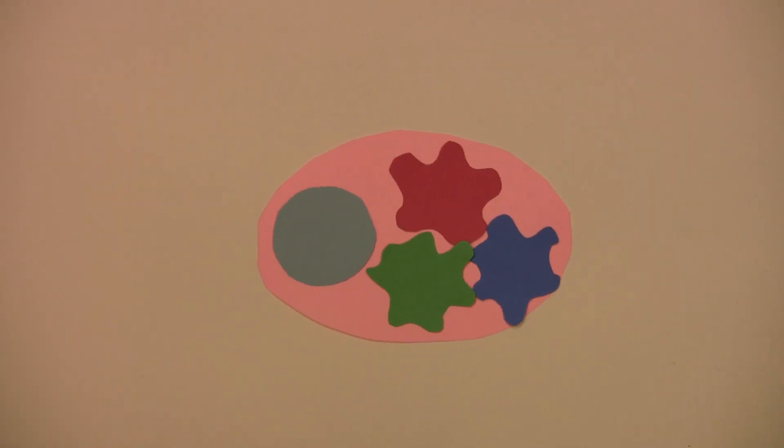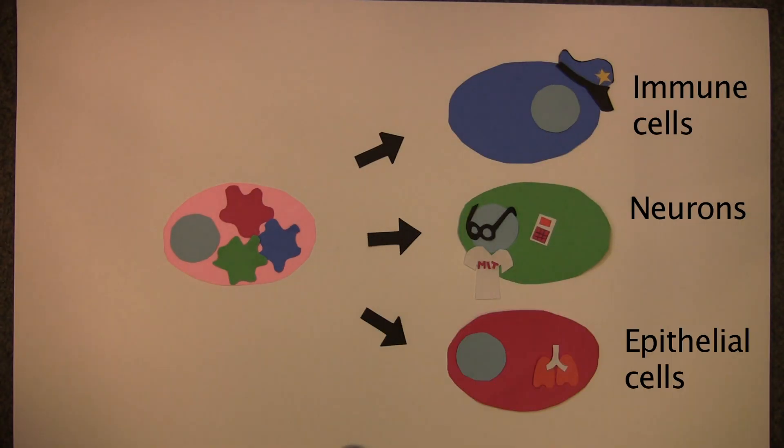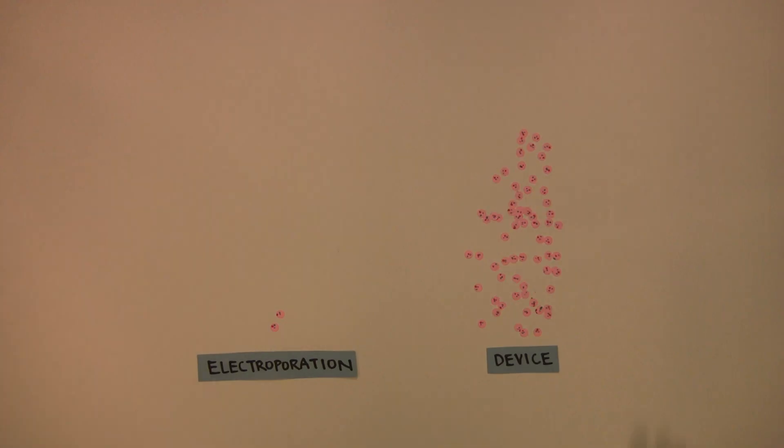Cell reprogramming is another area of interest. Stem cells are valuable because they can differentiate into any cell type, but adults don't have any. We applied our technique to the new field of reprogramming whereby one can transform adult cells back into stem cells. Turns out, we are 10 to 100 times better at generating stem cells than the competition.